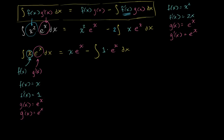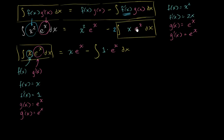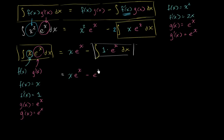Remember, I'm just focused on this inner antiderivative. If we can figure out what it is, we can substitute back into our original expression. The antiderivative of 1 times e to the x is just the antiderivative of e to the x, which is just e to the x. So this simplifies to x times e to the x minus e to the x.